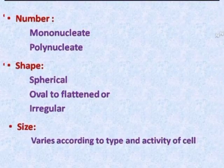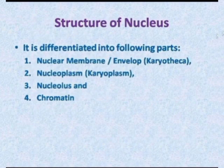A nucleus has been described as having four important parts, namely: a nuclear membrane, or nuclear envelope, or karyotheca; nucleoplasm, or karyoplasm; nucleolus; and chromatin matter.